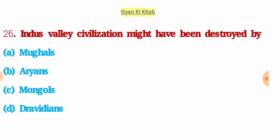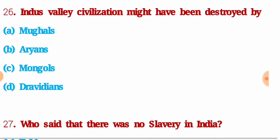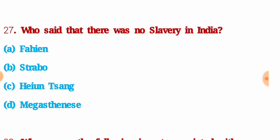First question: the Indus Valley Civilization might have been destroyed by — you have four options and you have to choose the correct answer. The right answer is option B: Arians. Next question: who said that there was no slavery in India? The right answer is option D: Megasthenes.